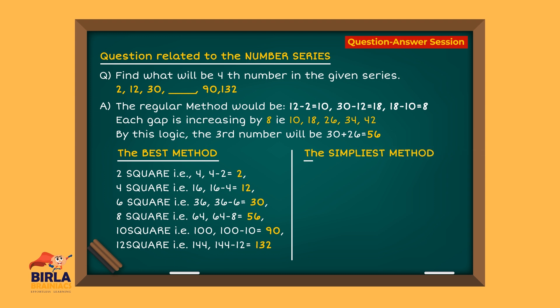The simplest method, however, is: 1×2 is 2, 3×4 is 12, 5×6 is 30, 7×8 is 56, 9×10 is 90, and 11×12 is 132.